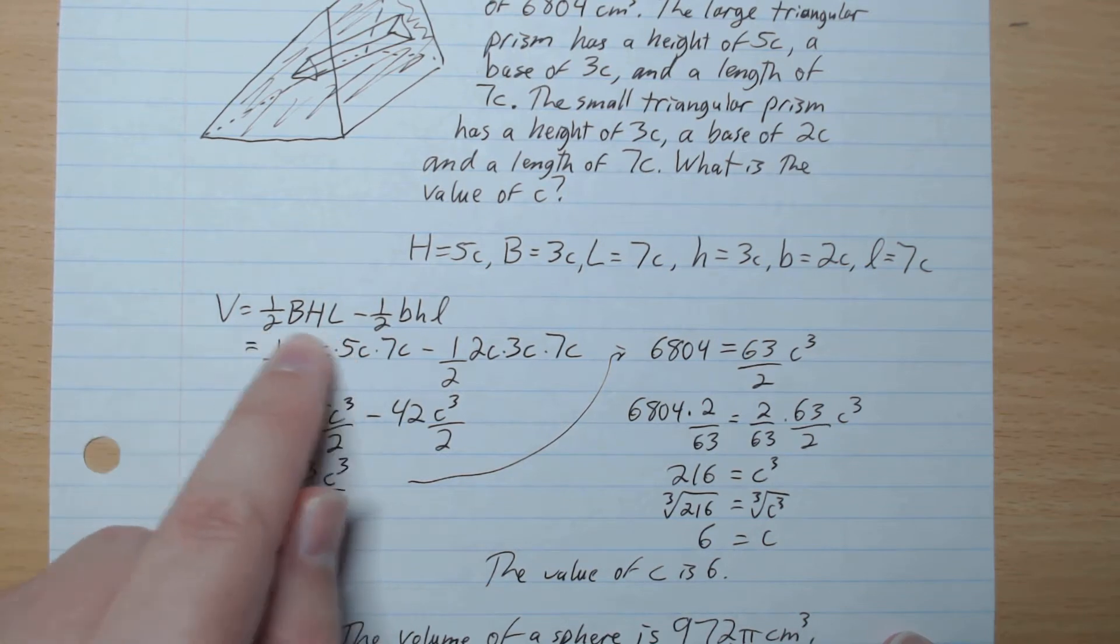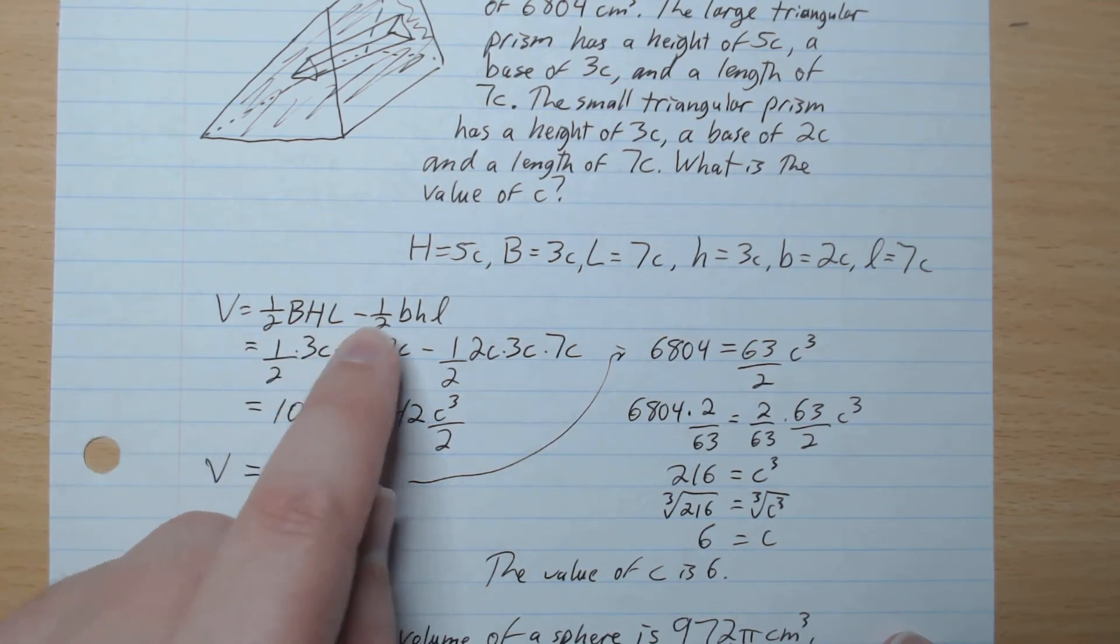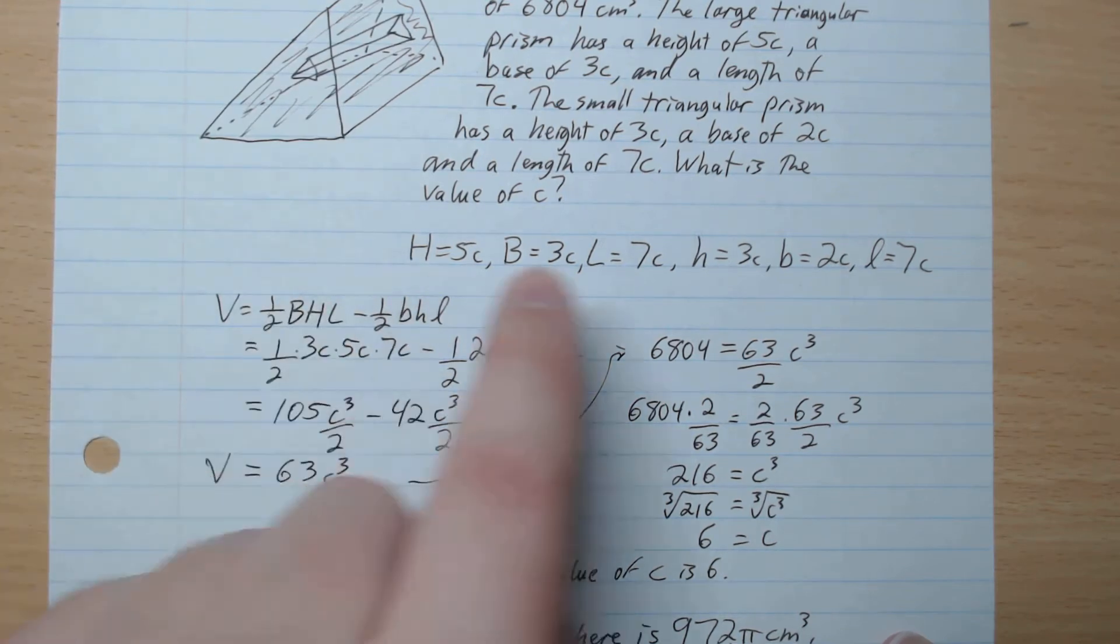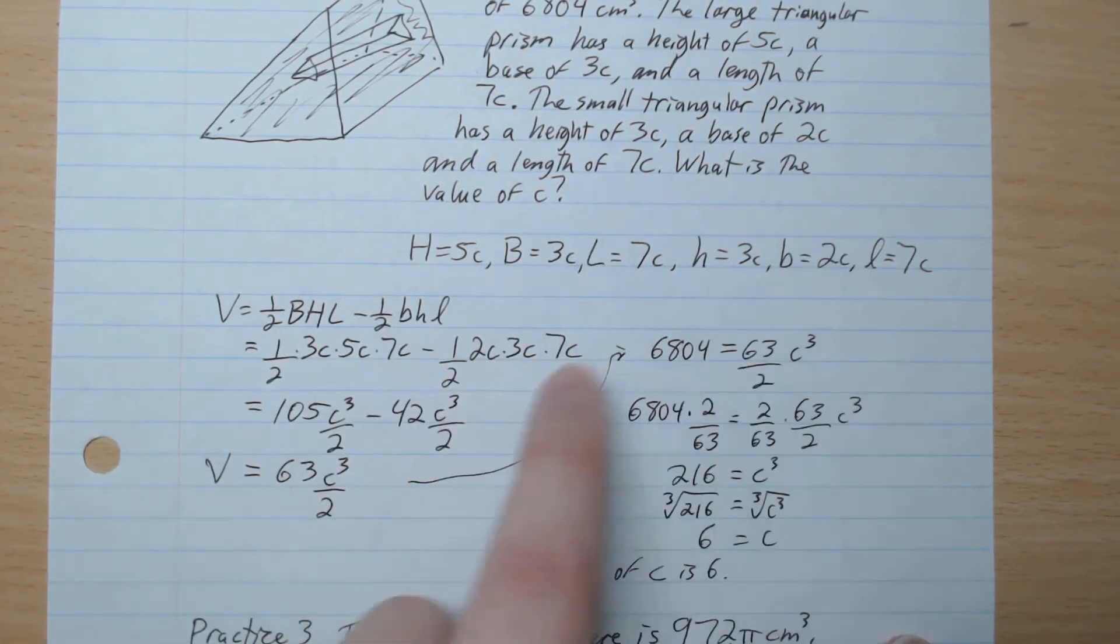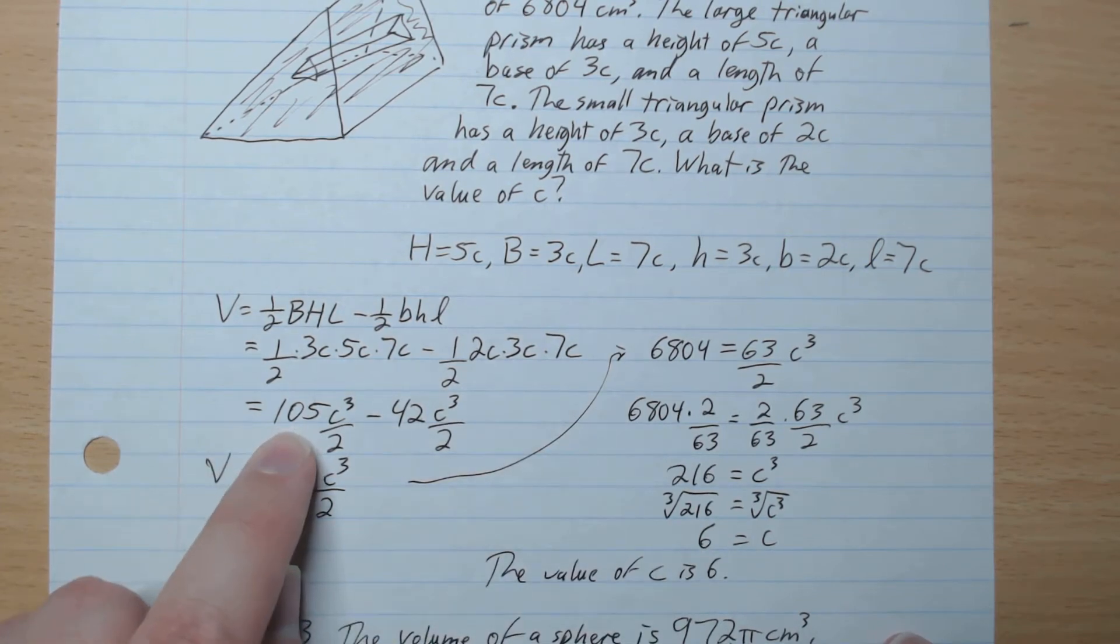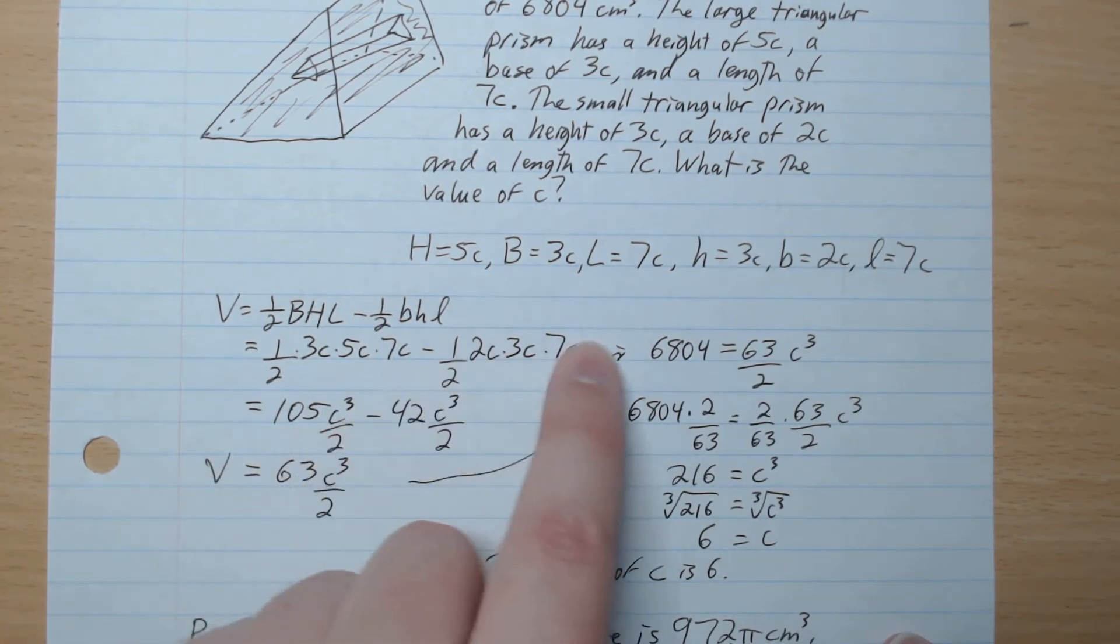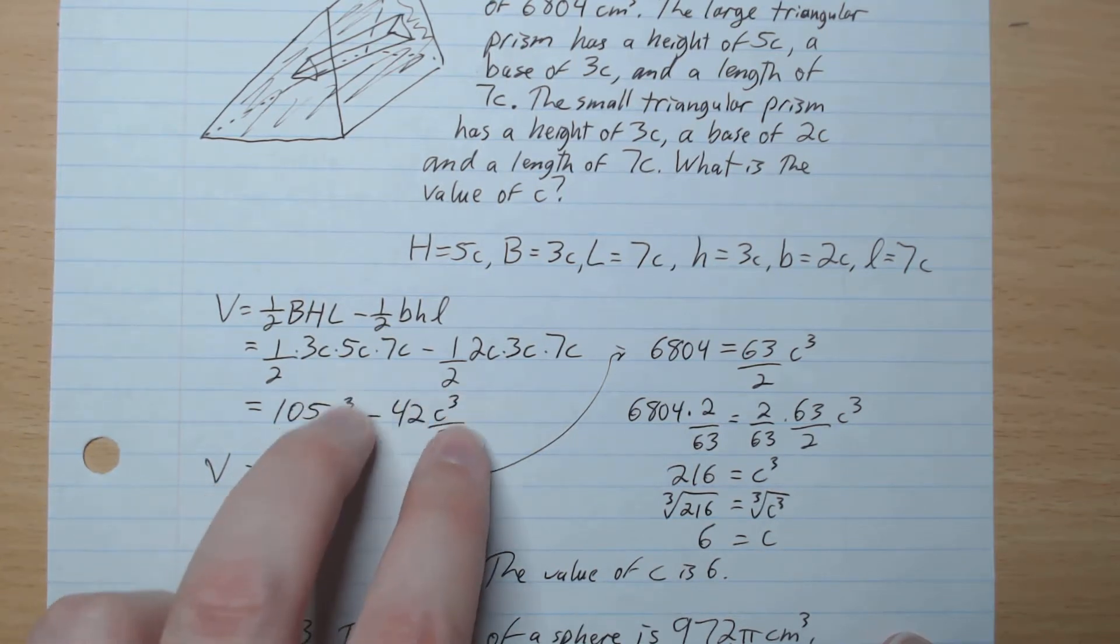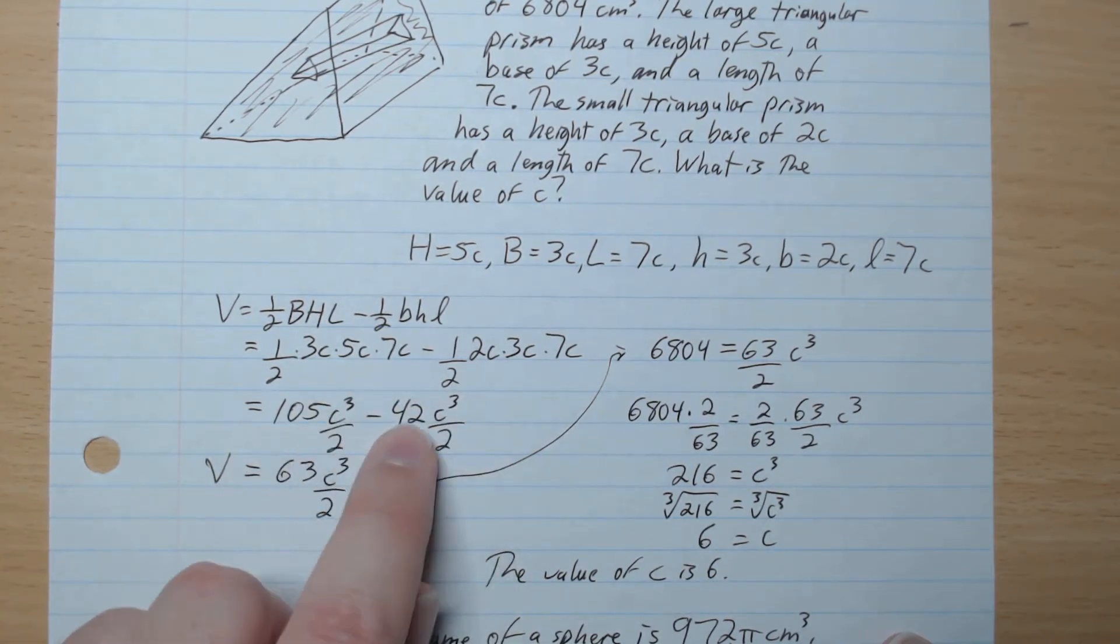So the volume is the big triangular prism minus the small triangular prism, because it's a hole. So we plug in our BHL. Plug in our BHL, which gives 105c³ over 2 minus 42c³ over 2. And c³ over 2 is like terms. So we can go 105 minus 42,